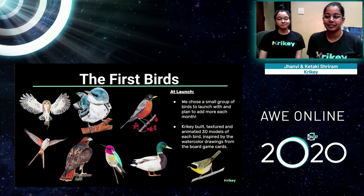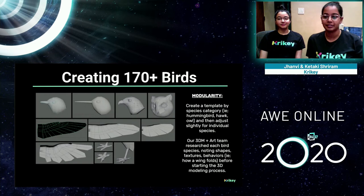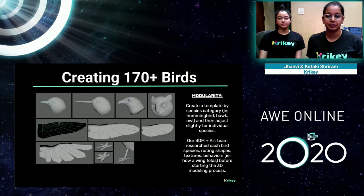We have a task of creating more than 170 digital birds for this game. We start by creating a template by species category — once we have one hummingbird, it becomes easier to create the second hummingbird and so on. We can adjust slightly for individual species based on shape of beaks, wings, and bodies. Our 3D modeling and art team researches each bird species, noting specific shapes, textures, and behaviors — for example, how a wing folds — before starting the 3D modeling process.